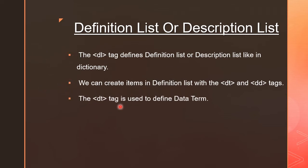The DT tag is used to define a data term — the word whose meaning you want to write should be placed within the DT tag. For example, if I want to write the meaning of the word 'joyful', then that word 'joyful' will be written inside the DT tag.